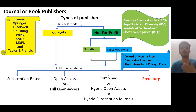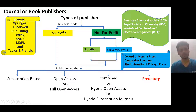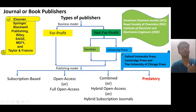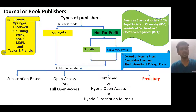For-profit publishers include the most popular world-renowned publisher Elsevier, followed by Springer Nature, Blackwell Publishing, John Wiley and Sons, SAGE Journals, MDPI Publications, and Taylor & Francis. These are very strong publishers that publish many books, book series, and journal articles, all operating under a for-profit business model.